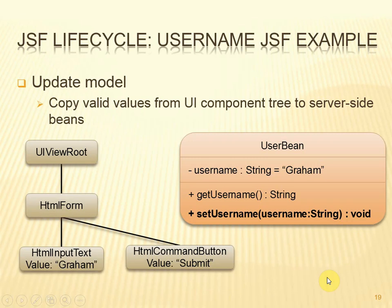We're ready to move on to update the model. Our model has a single field with a corresponding get and set method. At this point we're using set methods because we're copying values from the tree into the bean. The controller servlet will call setUserName, passing the value as the parameter, and the method will simply set the value of the field. In this simple example that's all we're doing in the model, but we could do more complicated things — for example, using this value to extract information from a database in preparation for rendering that data in a second view.